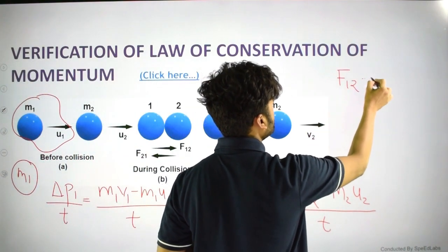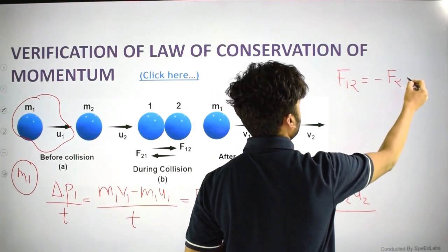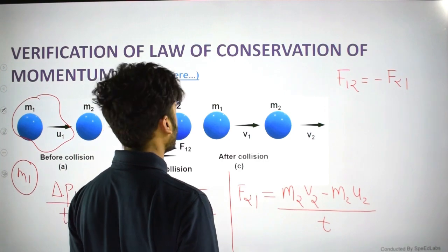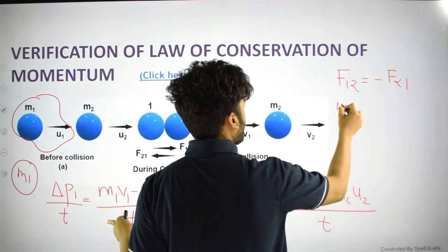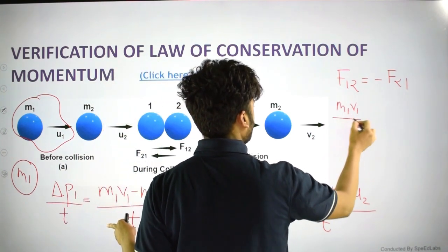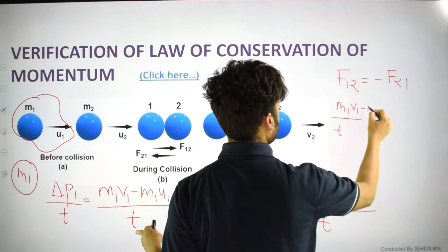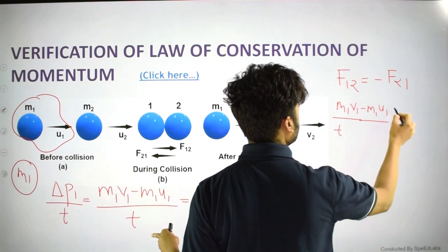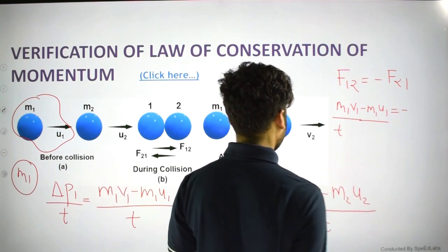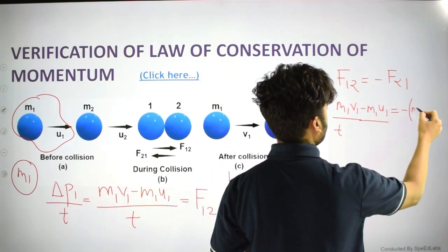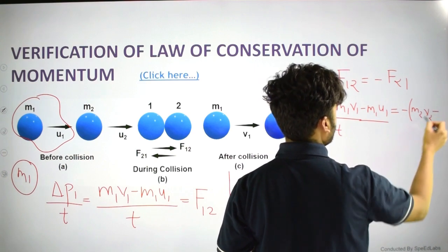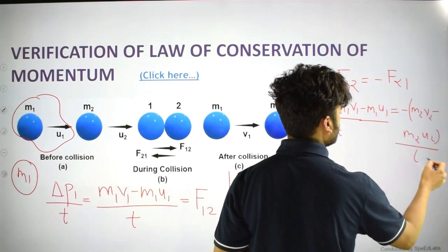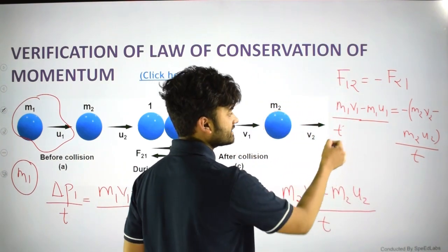Since f12 = −f21, substituting the expressions gives: (m1·v1 − m1·u1) / t = −(m2·v2 − m2·u2) / t. The t cancels from both sides.